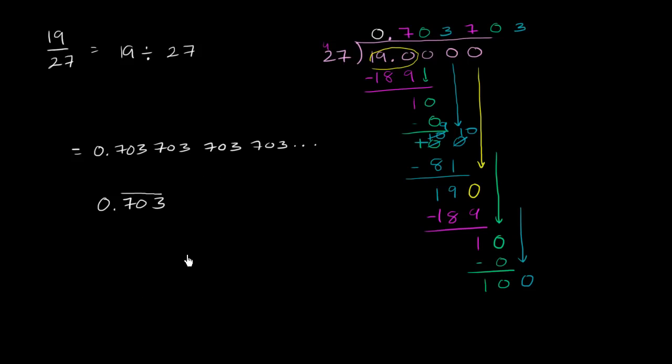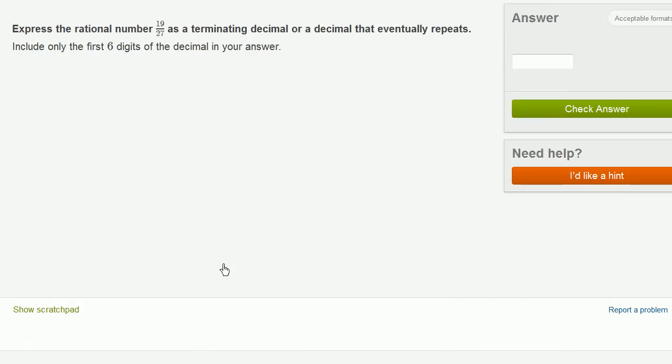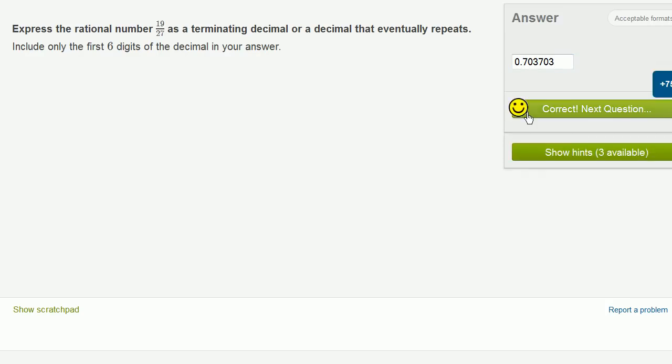So let's actually input it into the exercise now. So it's 0.703703. They tell us to include only the first six digits of the decimal in your answer. They don't tell us to round or approximate. Obviously if they said round to that smallest sixth decimal place, then you would round up because the next digit is a 7. But they don't ask us to round. They just say include only the first six digits of the decimal in your answer. So that should do the trick. And it did.